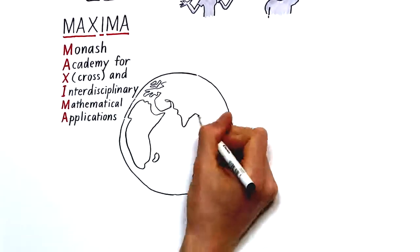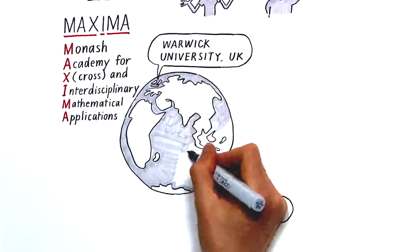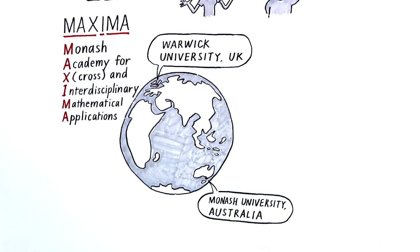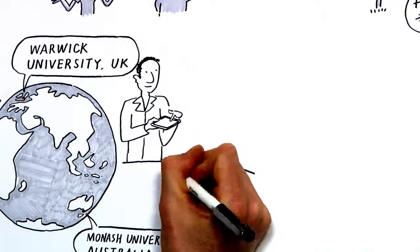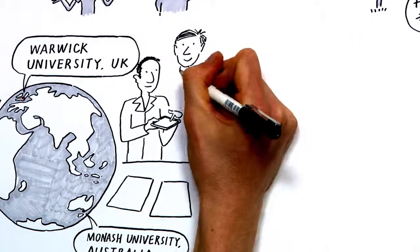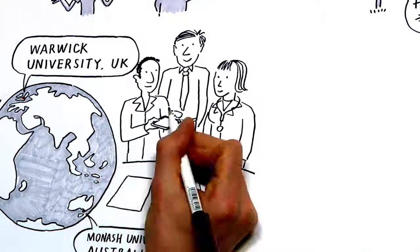Maxima harnesses the best mathematical minds from across our university and our global partners in a structured, coordinated way. Through collaboration between mathematicians and interdisciplinary and industry partners, Maxima is exploiting the power of existing mathematics to deliver impact to society now.